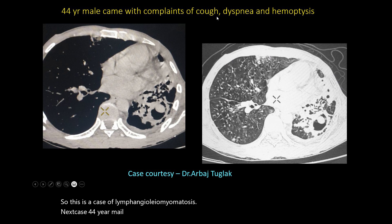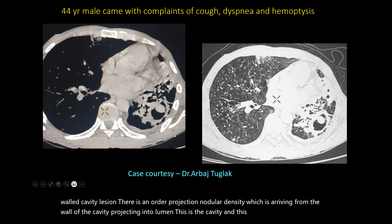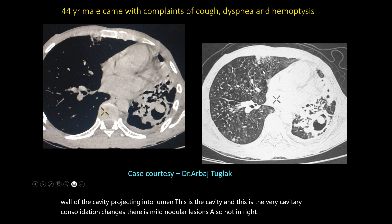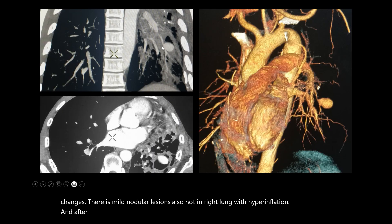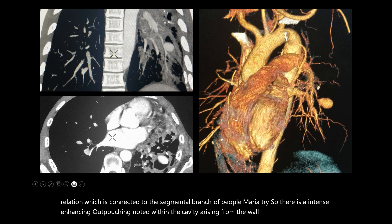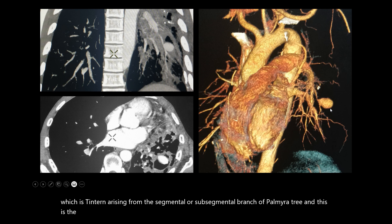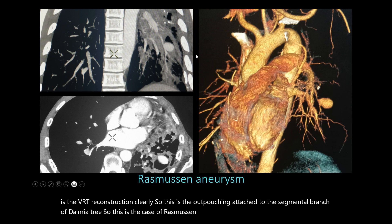Next case: A 44-year-old male presenting with cough, dyspnea, and hemoptysis. There is a thick-walled cavitatory lesion with a nodular density arising from the wall of the cavity, projecting into the lumen. This is the cavity with pericavitatory consolidation changes. After giving contrast, there is intense enhancement noted within the nodular lesion, which is connected to the segmental branch of the pulmonary artery. The VRT reconstruction clearly shows this outpouching attached to the segmental branch of the pulmonary artery. This is a case of Rasmussen's aneurysm arising from a pre-existing tubercular cavity.